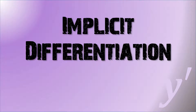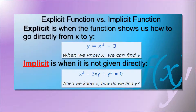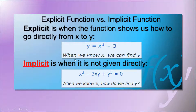Our topic will be about implicit differentiation. As we have discussed already under the topic of functions, a function is composed of two types: the explicit and the implicit form. Here we are going to discuss about the implicit only, since we are done with the explicit differentiation.